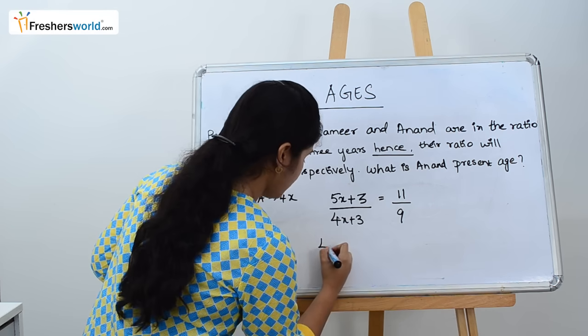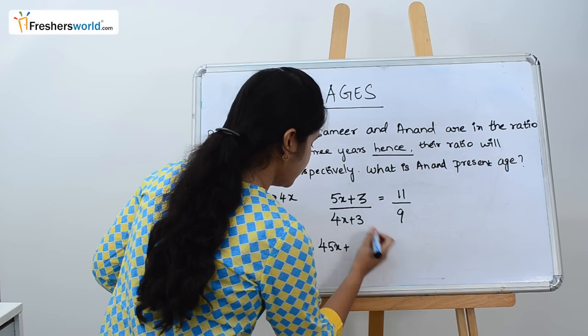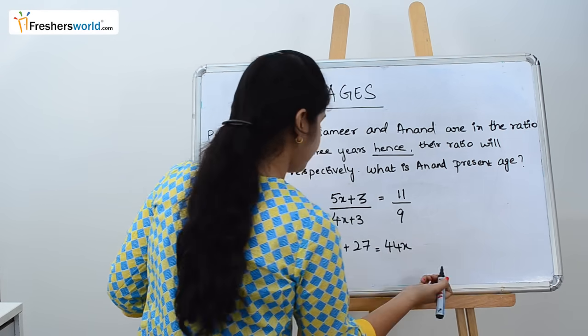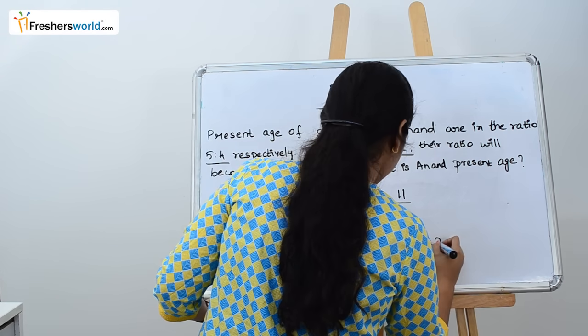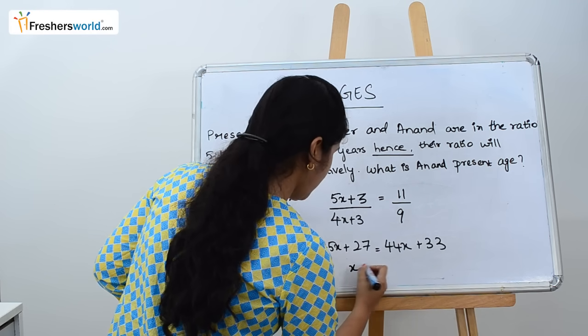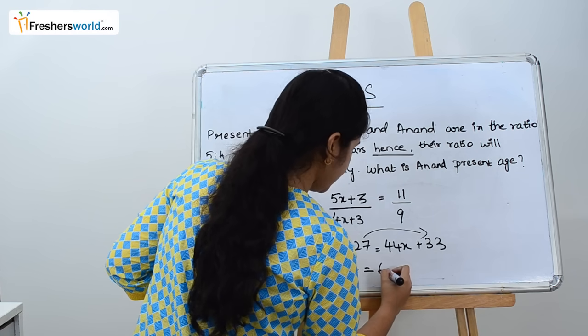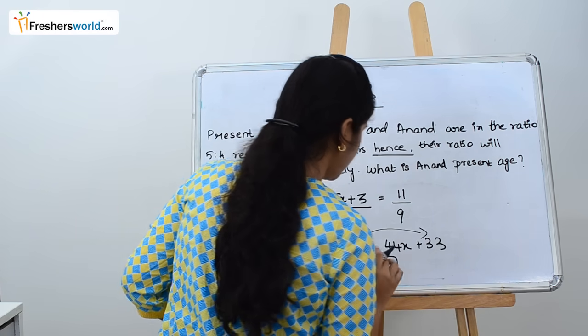We have to find X. So 45X plus 27 equals 44X plus 33. 45 minus 44 is X. 33 minus 27 is 6. So X equals 6.